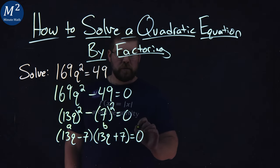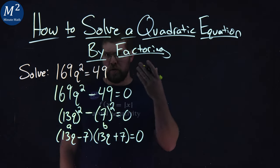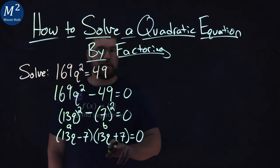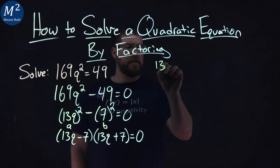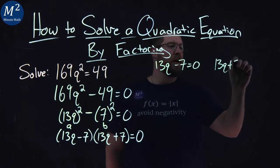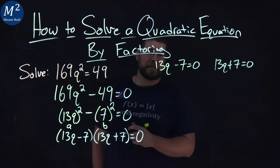Now, from here, I want to solve each one. So we're using the zero product property here. I want to set each parenthesis equal to zero. 13q - 7 = 0, and 13q + 7 = 0.